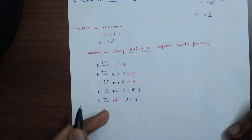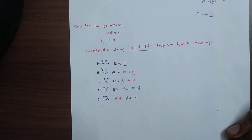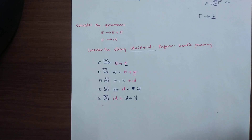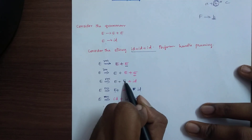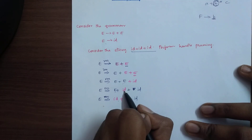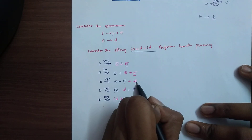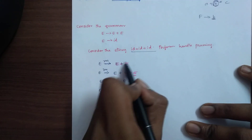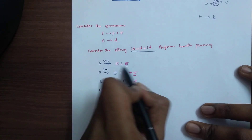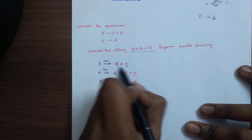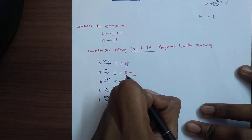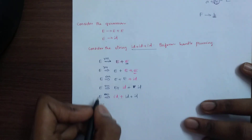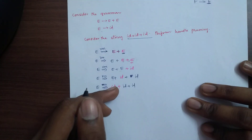The first thing is E. The ID is shown in red color. The first time, the capital E is called E plus E, so that is shown in red color — that is a handle. The answer is the last rightmost derivation.